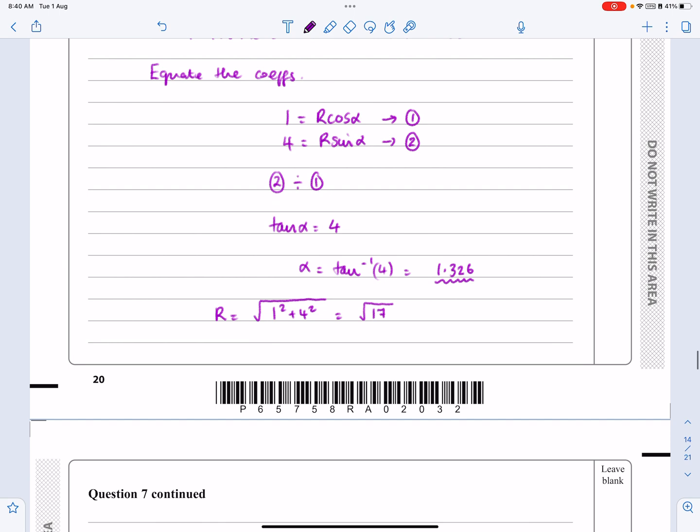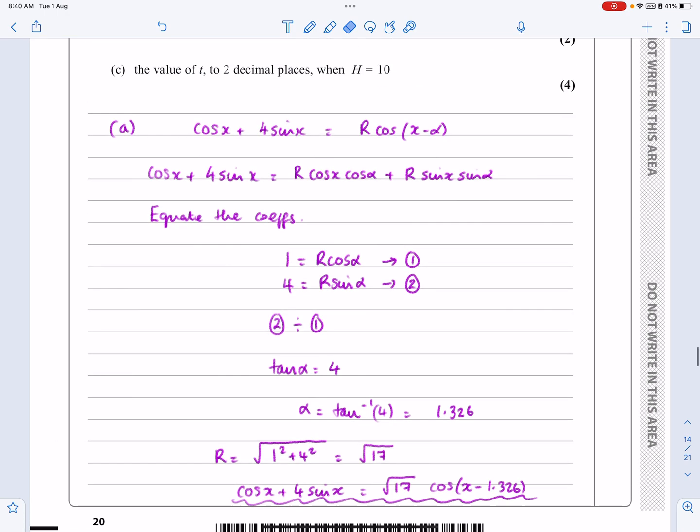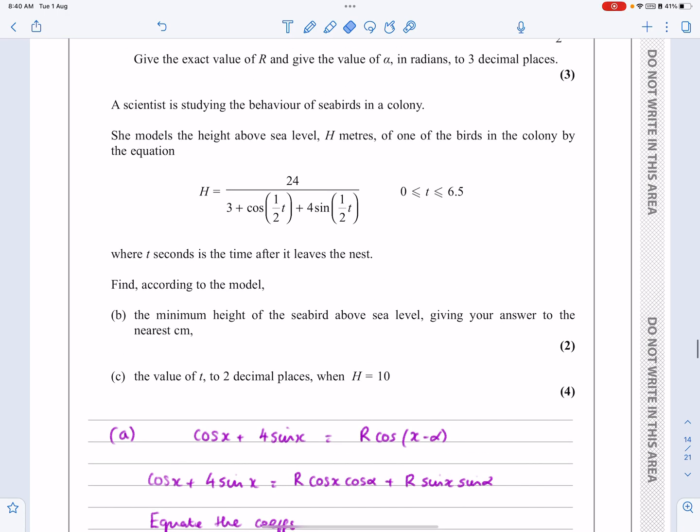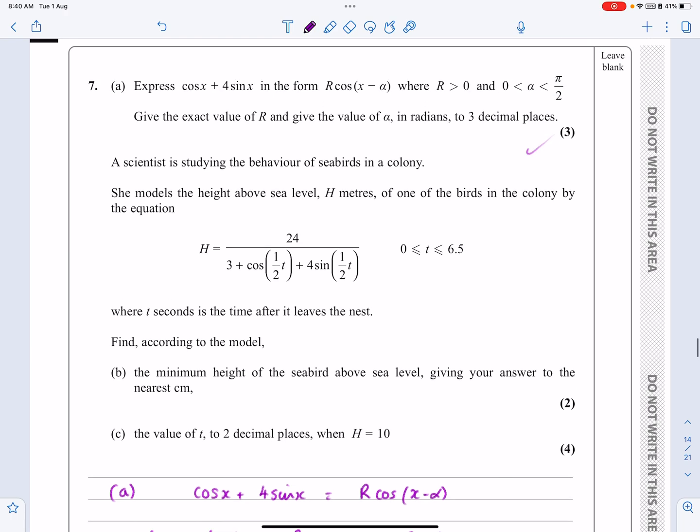So, the question said, cos x plus 4 sin x is the same as root 17 cos x minus 1.326. Okay, and that is my actual answer. Yeah, so I've done that and I've solved it exactly as they wanted to do. Part A, done. Exact value of R and alpha to 3 decimal places.